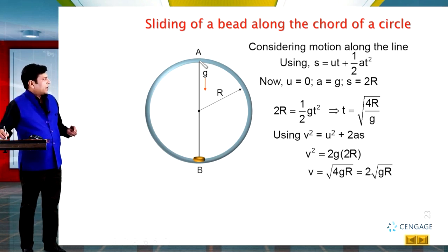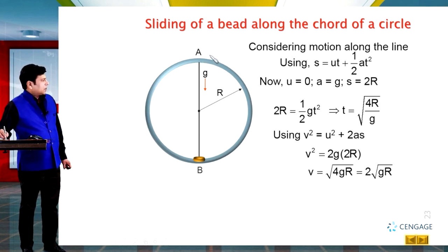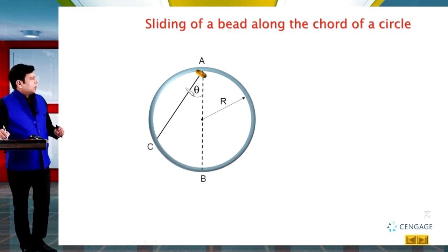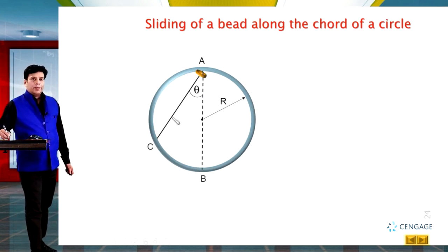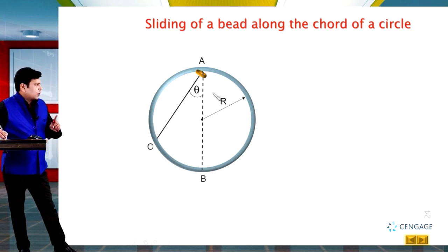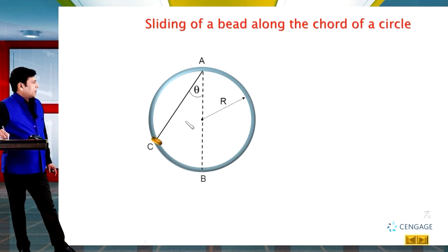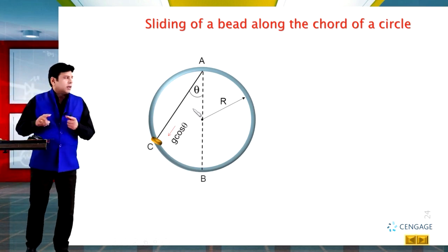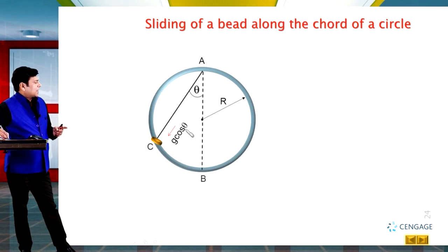Now let us take angle theta. This is wire AC. If the bead moves along AC, the acceleration along the direction was g when along the vertical. That means the acceleration of the bead along AC should be equal to g·cosθ. When we consider the absence of friction, the acceleration along this line is equal to g·cosθ.